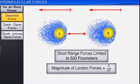Dispersion force has a short range — it is about 500 picometers. If you talk about the magnitude of London force, it is inversely proportional to r to the power 6, meaning the force is proportional to 1 upon r^6.